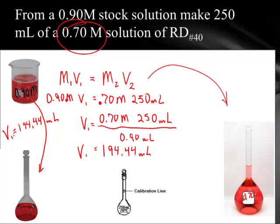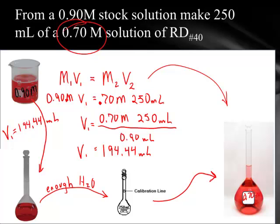I add that to this container. And then how much water do I add? I simply add enough water to bring my final volume up to the calibration line on the 250 milliliter volumetric flask. And what do I have? I have a 0.7 molar solution.